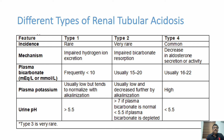Comparing the types: Type 1 mechanism is impaired hydrogen excretion; Type 2 is impaired bicarbonate reabsorption; Type 4 is decreased aldosterone secretion or activity. Plasma bicarbonate is less than 10 in Type 1, 15–20 in Type 2, and 16–22 in Type 4. Plasma potassium is low in Types 1 and 2 (and decreases further with alkalinization), while Type 4 has very high potassium. Urine pH is more than 5.5 in Type 1 (dropping to less than 5.5 when bicarbonate is depleted) and less than 5.5 in Type 4.